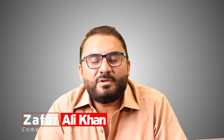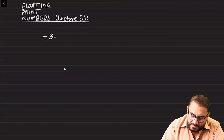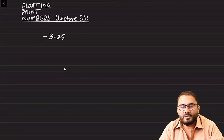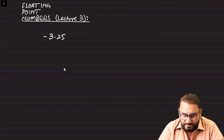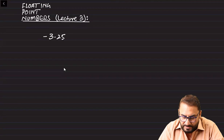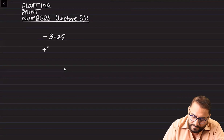Hello and assalamu alaikum, this is lecture 3 on floating point. Now we will discuss how to convert a negative number into binary floating point form. So let's say we have minus 3.25. Whenever you come across a negative number, we have to solve it as a positive number first, so let's solve plus 3.25.